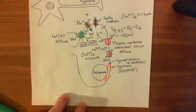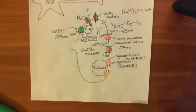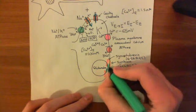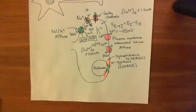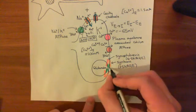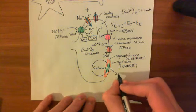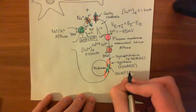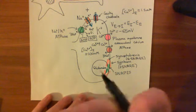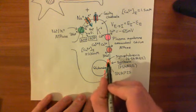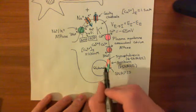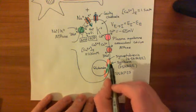The final SNARE protein involved in the formation of this core complex is called SNAP25, which consists of two alpha helices and is also a T-SNARE implanted into the plasma membrane. These four alpha helices — one each from synaptobrevin and syntaxin, and two from SNAP25 — join together to form the core complex that holds the synaptic vesicle to the plasma membrane. Many of these complexes form simultaneously.